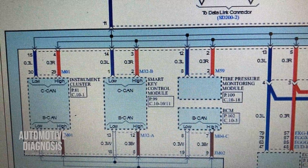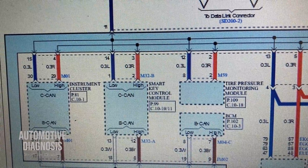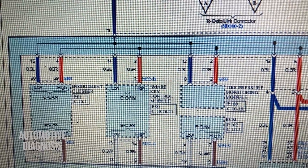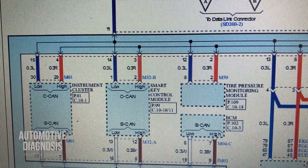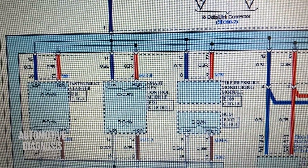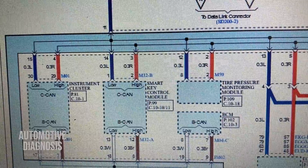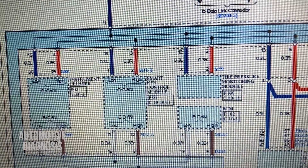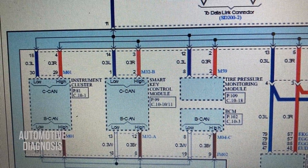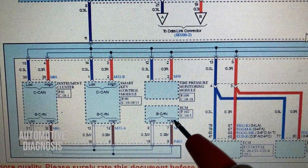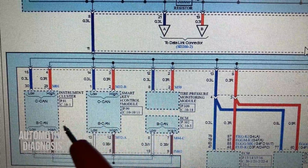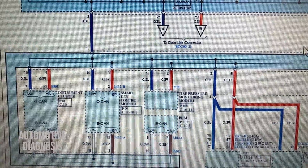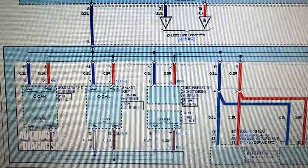The body CAN speed range is between 10 kilobits per second to 125 kilobits per second — the main speed difference from high-speed CAN. The voltage is also different: you shouldn't expect the same readings as high-speed CAN. I'm going to show you how to read the voltage and the waveform. On this particular car, there's no smart key module, only BCM and instrument cluster connected to the body CAN.